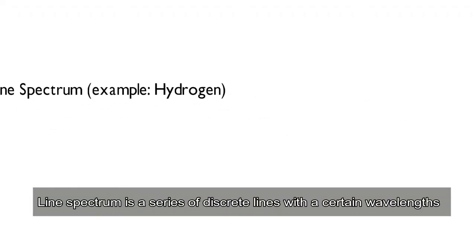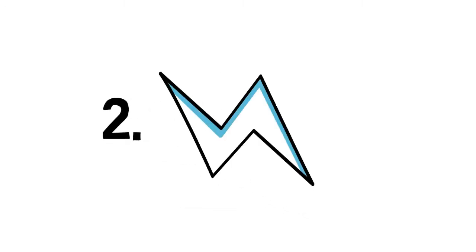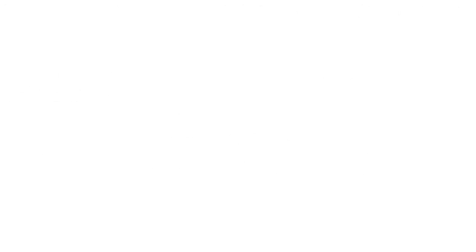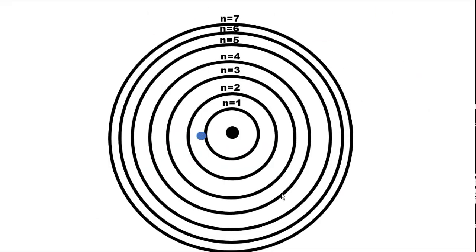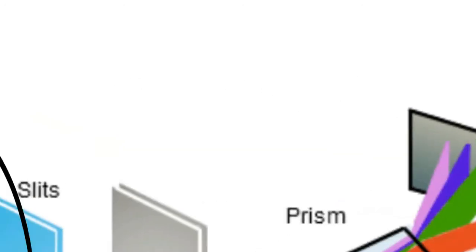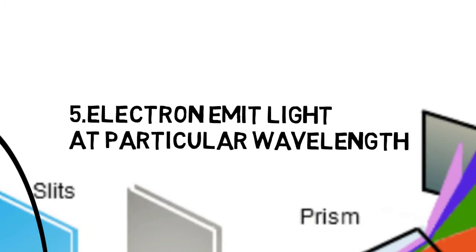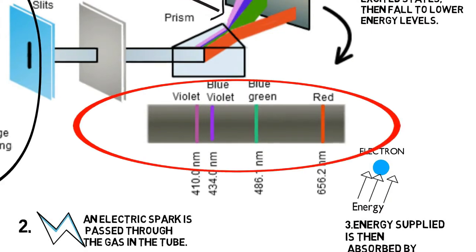But do you know what line spectra actually are? A line spectrum is a series of discrete lines with certain wavelengths, where each line corresponds to a specific wavelength or frequency. A gas of certain elements is filled into a gas discharge tube, and an electric spark is passed through the gas. The energy supplied is absorbed by the electrons, causing them to be promoted from the ground state to higher energy levels. These electrons are unstable at their excited states, then fall to lower energy levels and emit light at a particular wavelength. These emission patterns are called line spectra.